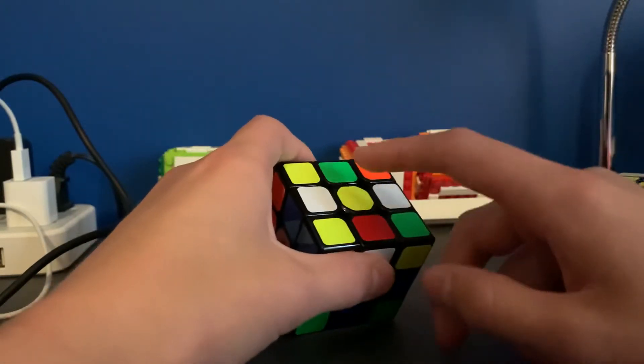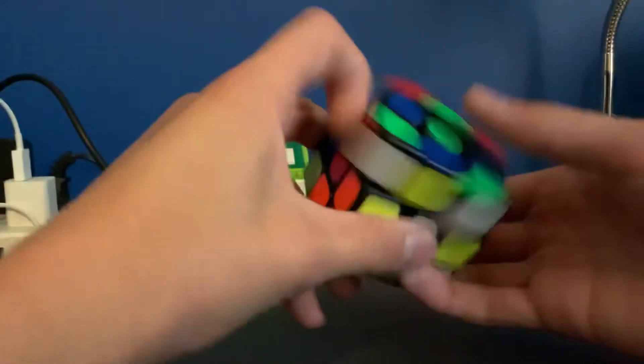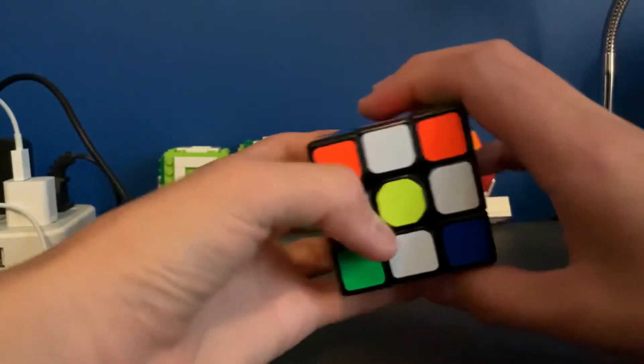And now it's on the last layer. So now I'm just going to, this is like an L case because the center and there's two white edges facing up. And now I got the cross.